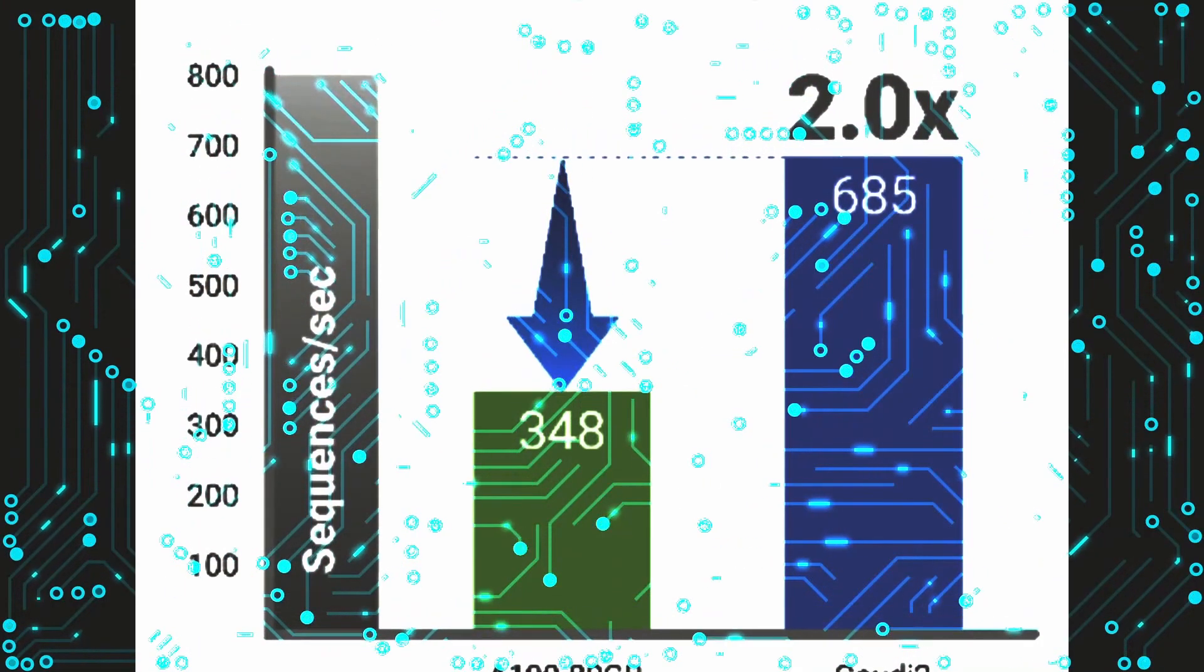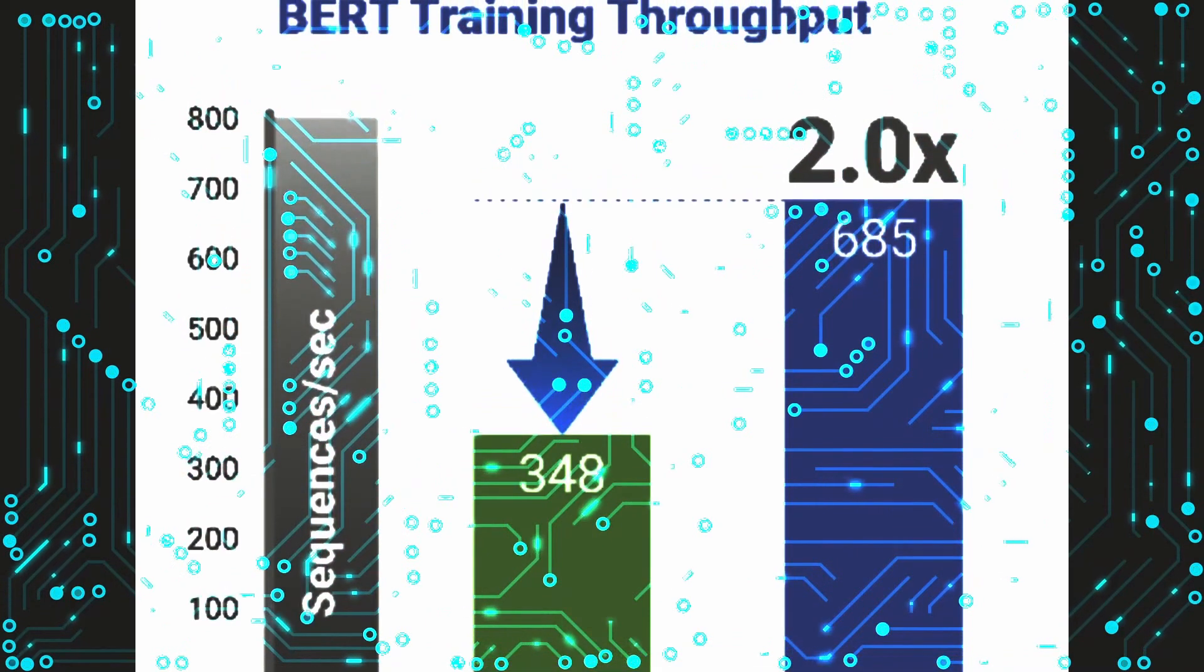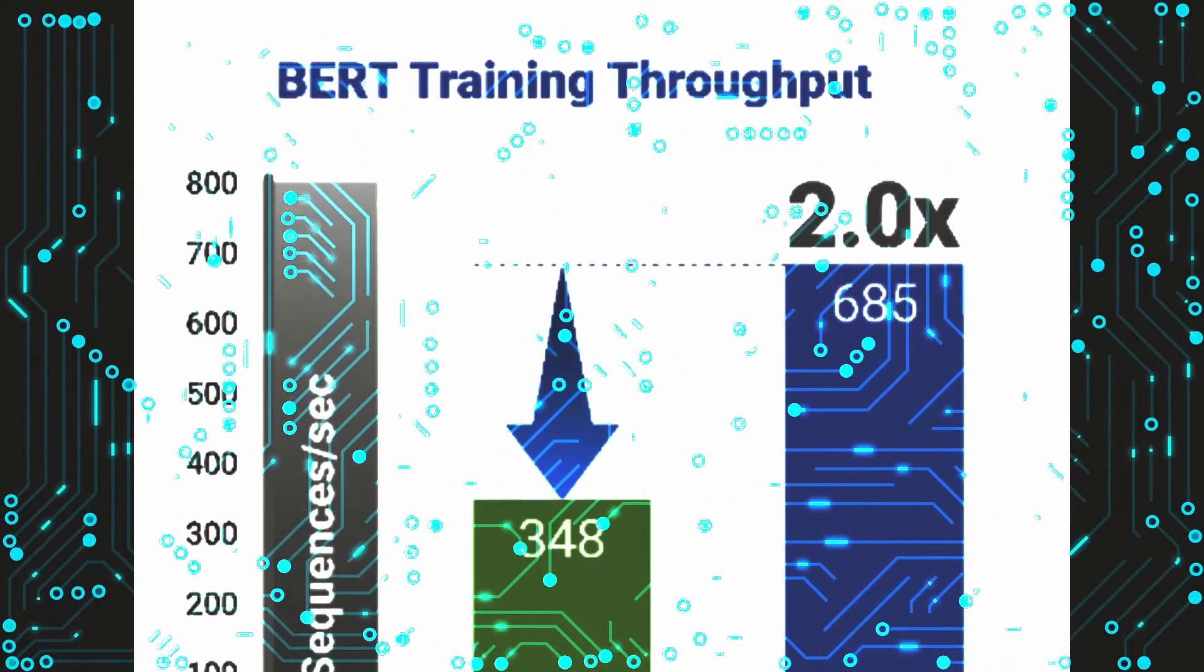The processor has a thermal design power of 600W compared to 350W for the original Gaudi, but it still uses passive cooling.